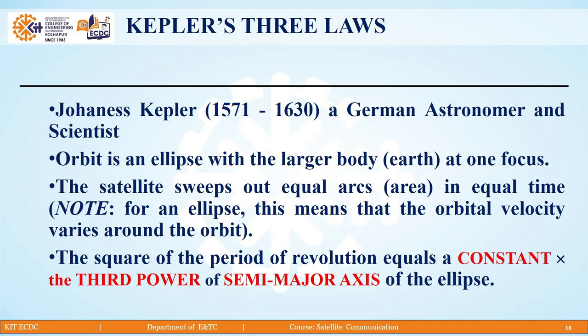Kepler is a German astronomer and scientist. He assumed that the orbit is an ellipse with the larger body, that is earth, at one focus. This is the first law.